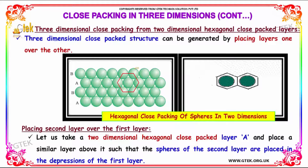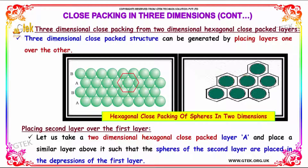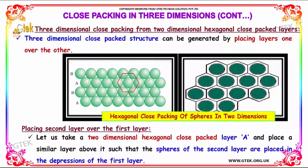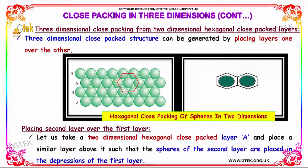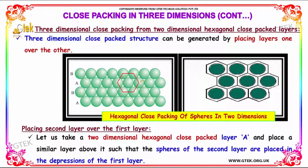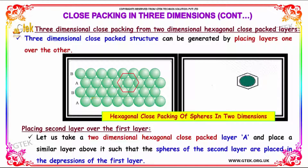Now let's move on to three-dimensional close packing from two-dimensional hexagonal close-packed layers. A three-dimensional close-packed structure can be generated by placing layers one over the other. We take a two-dimensional hexagonal close-packed layer A and place a similar layer above it such that the spheres of the second layer are placed in the depressions of the first layer.